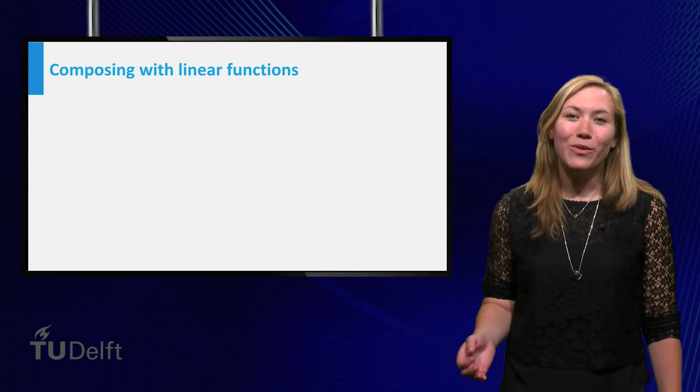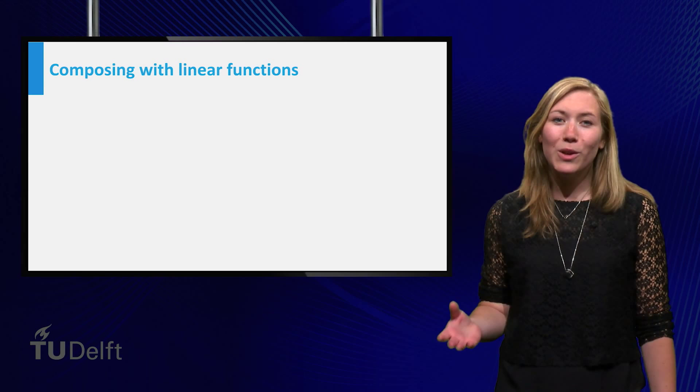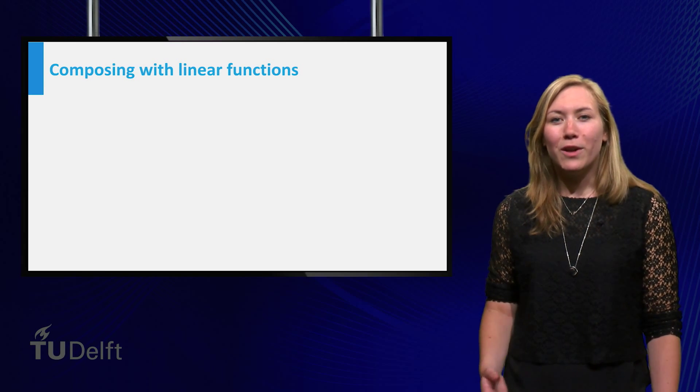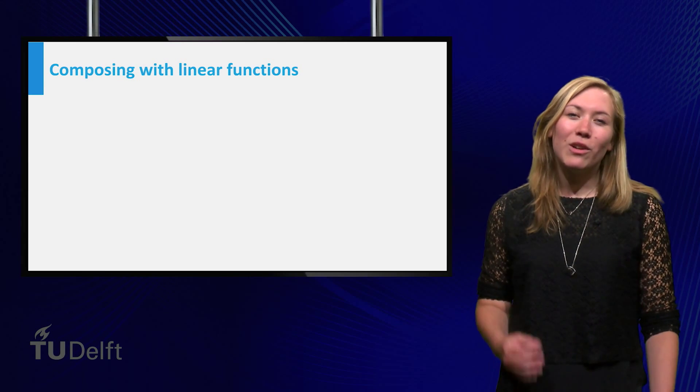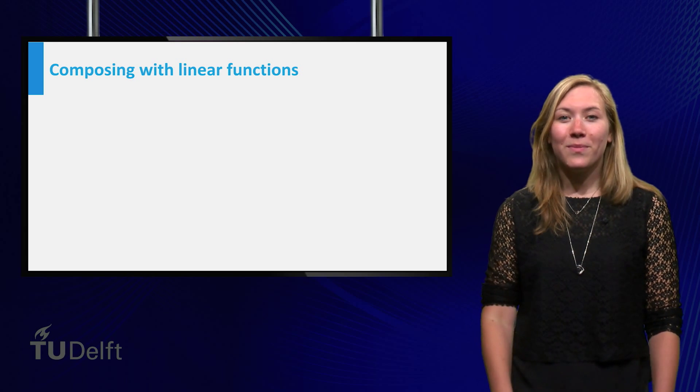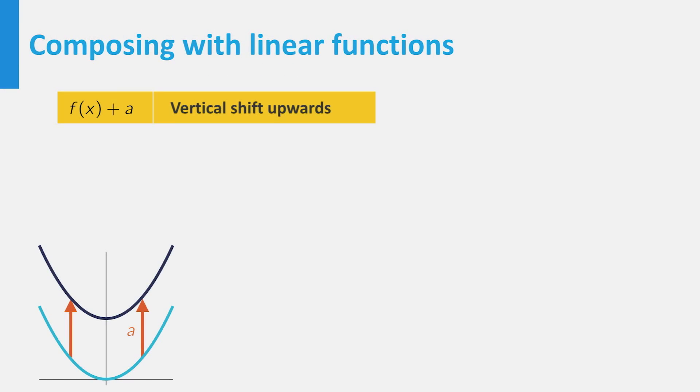Typically it is hard to identify what the graph of a composed function looks like, but when you compose a function with a linear function, the graph changes predictably. The graph of f(x) + a is equal to the graph of f but shifted a upwards. f(x + a) shifts the graph of f a distance a to the left.